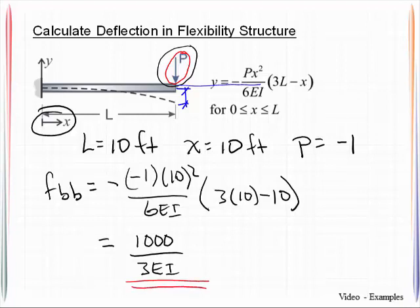And let me just give you a general piece of information. Whenever your subscripts are the same, your flexibility coefficient should always be a positive value. Regardless of the direction it's moving, it should always be a positive value. All that is stating is that your structure deflects in the direction that the force is being applied.